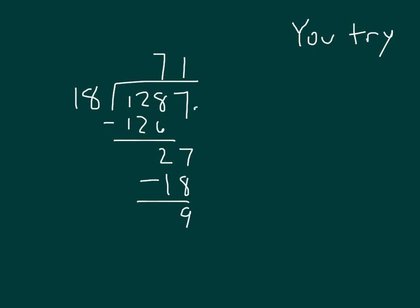I can add a 0 for the tenths place. Bring down a 0. I have 90. 90 divided by 18. Did you get 5? And then did you remember to place a decimal point for your answer there? Because you're dealing with tenths. Hopefully you did this last step as well. 90 minus 90 is 0. So our answer here is 71 and 5 tenths.